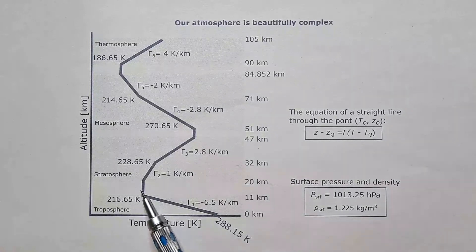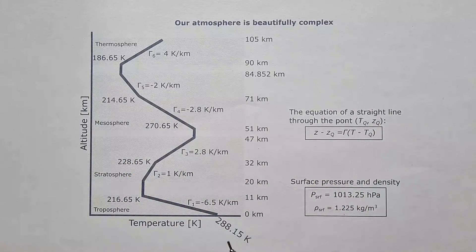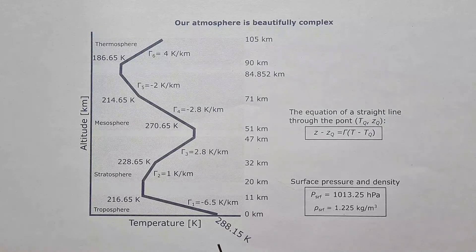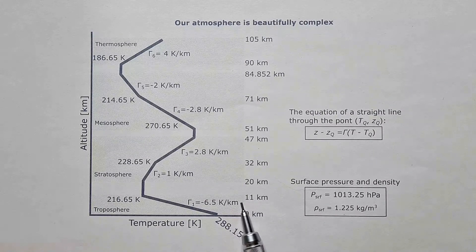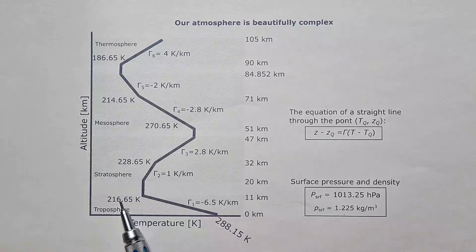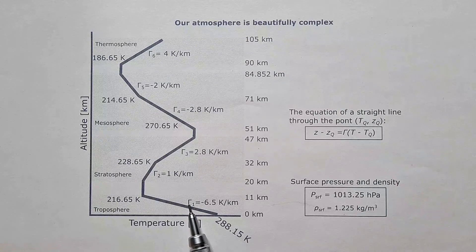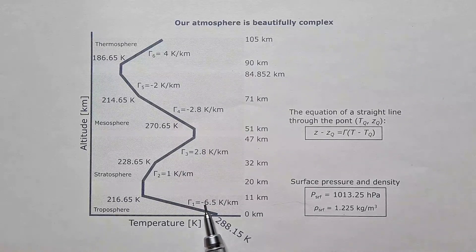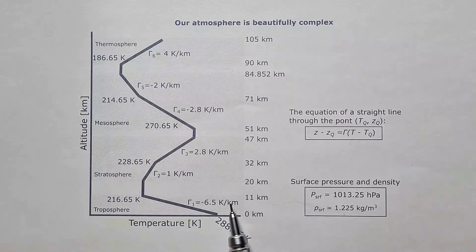So we have tropopause, stratopause, and mesopause. The surface temperature in the standard atmosphere is 288.15 kelvins, which is 15 degrees Celsius. Then it decreases at minus 6.5 kelvins per kilometer in the first 11 kilometers, which is the troposphere. At the top of the troposphere, temperature is 216.65 kelvins. We use the Greek letter gamma, capital gamma, to represent the gradient of temperature in our atmosphere. So here the gradient is minus 6.5 kelvins per kilometer, which is also minus 6.5 degrees Celsius per kilometer.